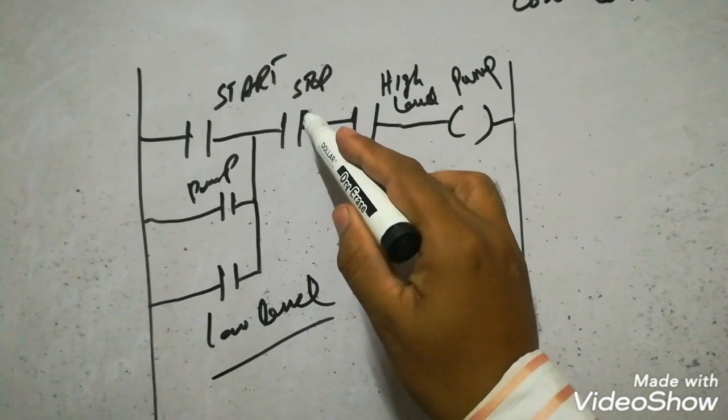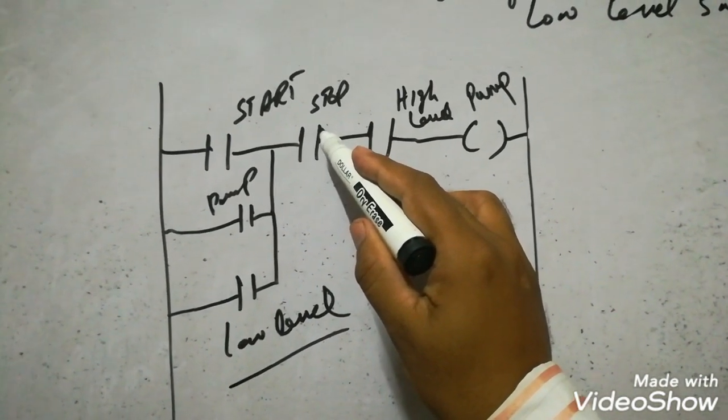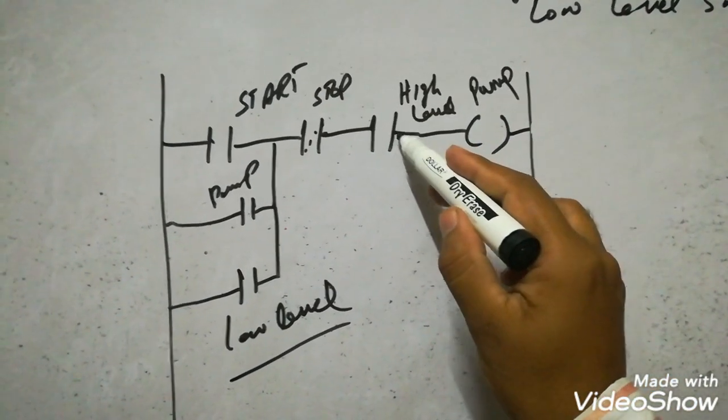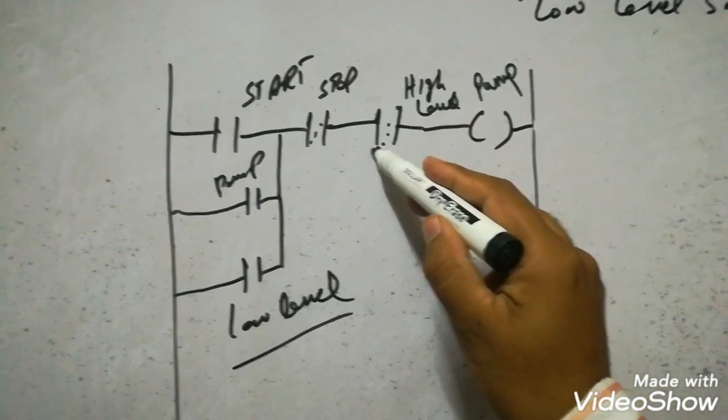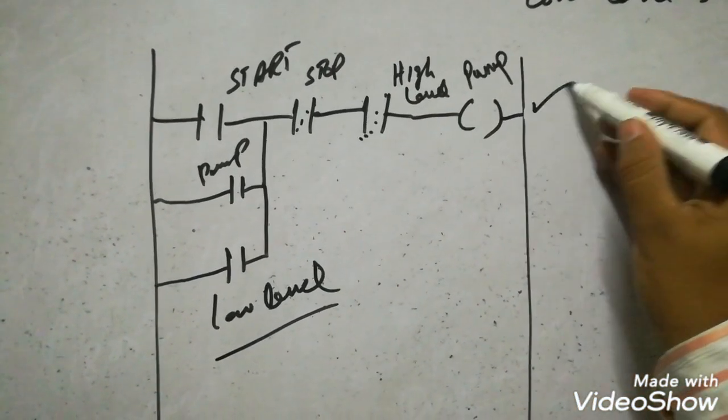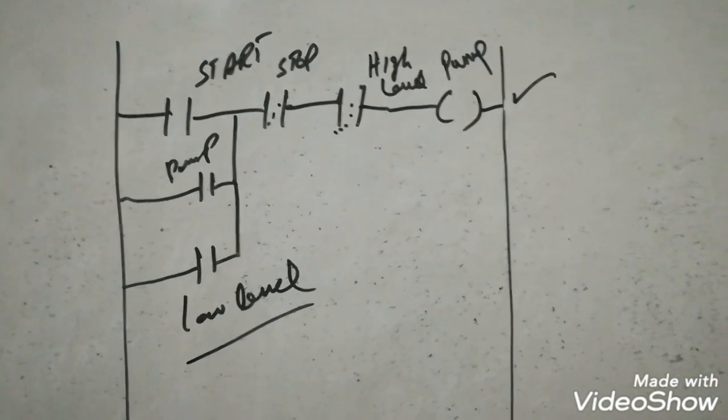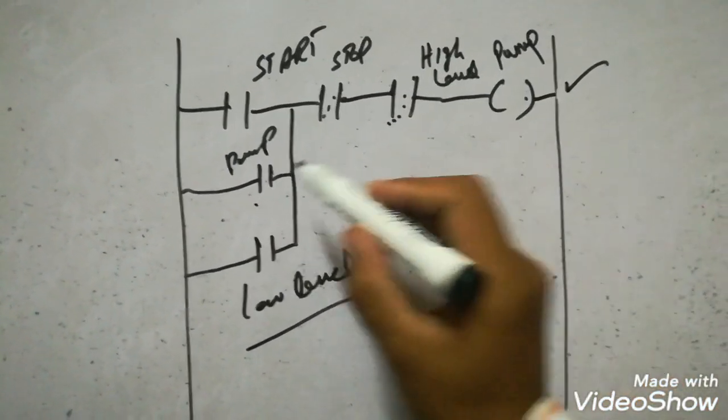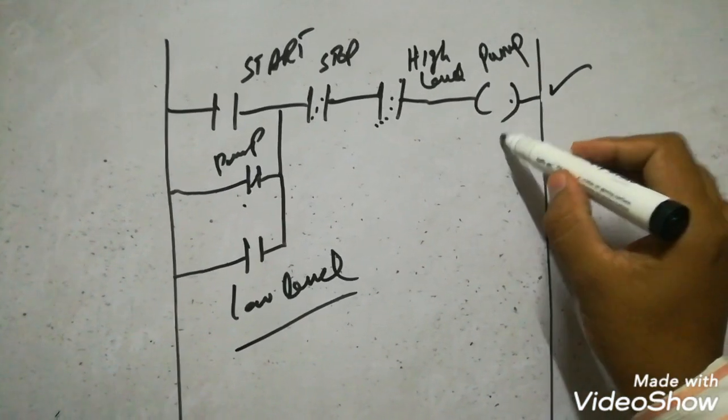So when we start, this stop is already closed. And high level, when there is no high level it will be closed and pump will start. It will keep running due to this auxiliary contact.